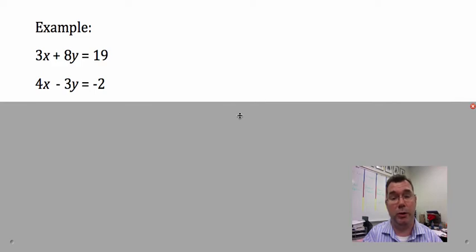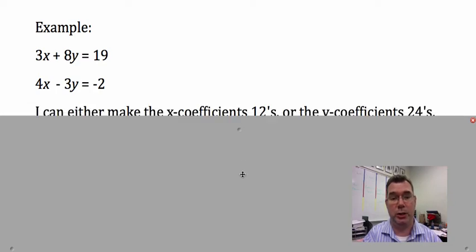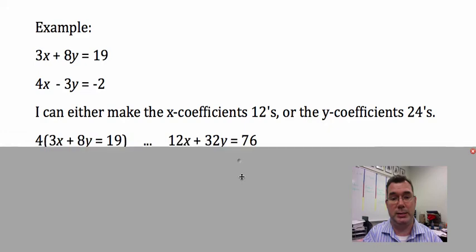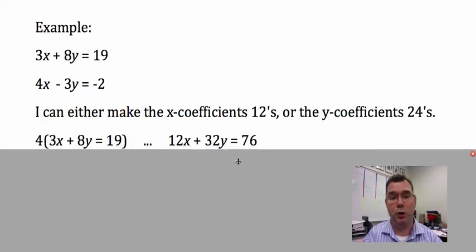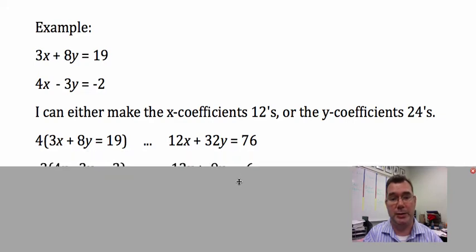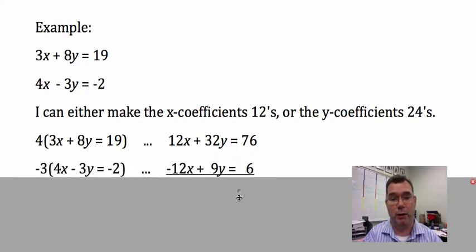Remember, if you want to multiply one of the coefficients by something, you have to multiply the entire equation by the same constant. Otherwise, you've created a different equation. I've decided to make the x coefficients 12s.